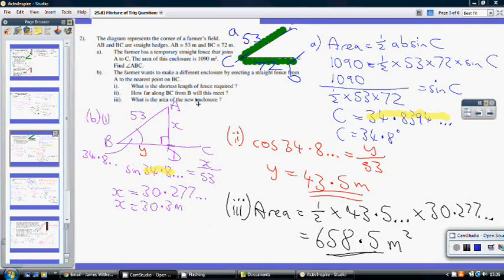Then B part 3, what is the area of the new enclosure? Well, this is just a right angle triangle that I want the area for. So, half times base times height. So, half times Y, which is 43.5 dot dot dot, times my height, which is X, which is 30.277 dot dot dot, which gives me 658.5 metres squared to one decimal place.